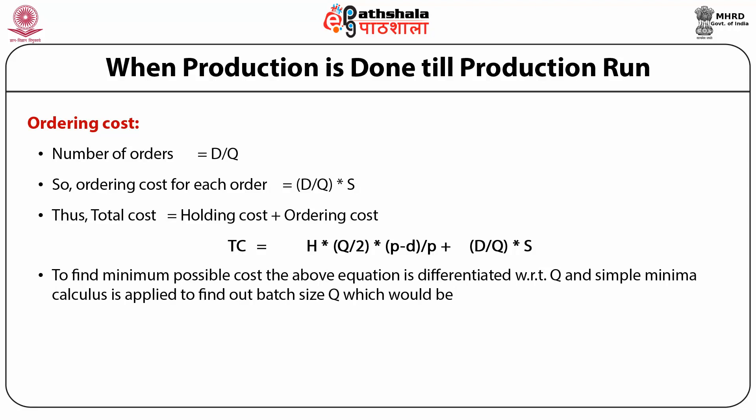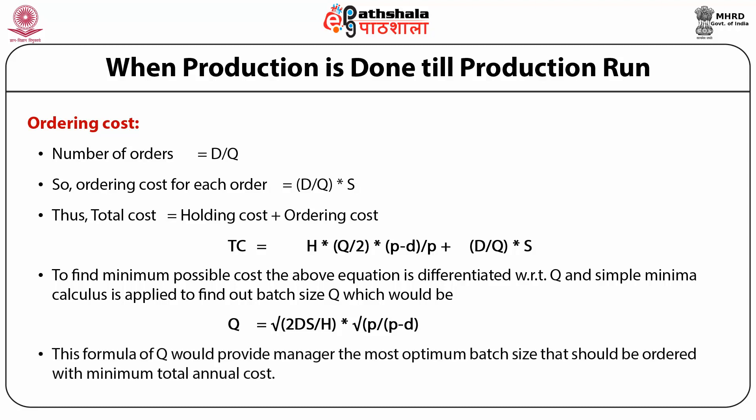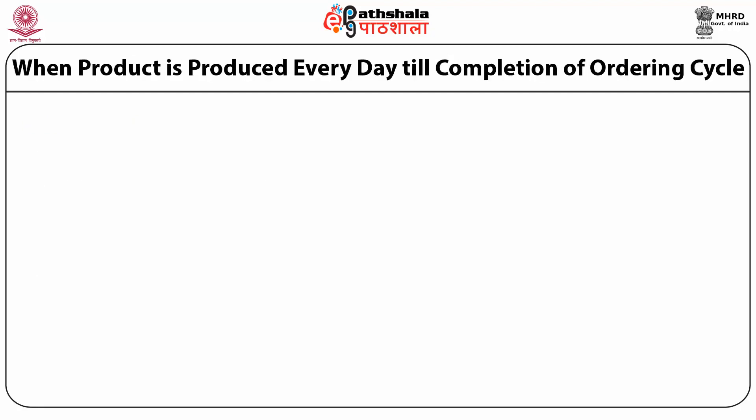To find minimum possible cost, the total cost equation is differentiated with respect to Q and minima calculus is applied to find the optimum batch size: Q* = √(2DS/H) × √(P/(P − D)). This formula provides the manager the most optimum batch size to order with minimum total annual cost.